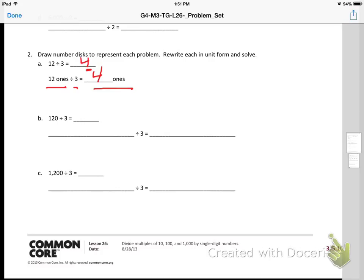So now I have the same problem but slightly different. Instead of 12, I have 120 with 1, 0. I know that 1, 0 means tens, so I can rewrite this as 12 tens. 12 tens divided by 3. Well, it's a lot like 12 ones divided by 3.